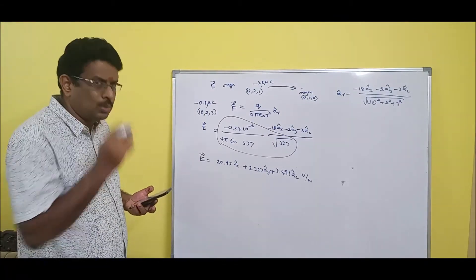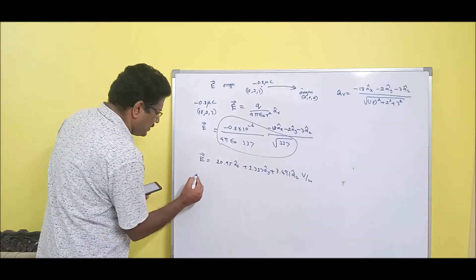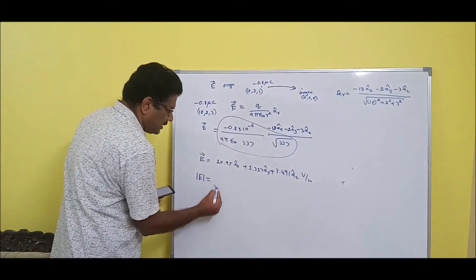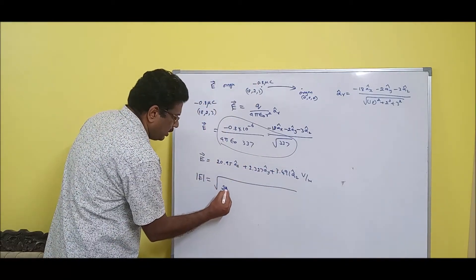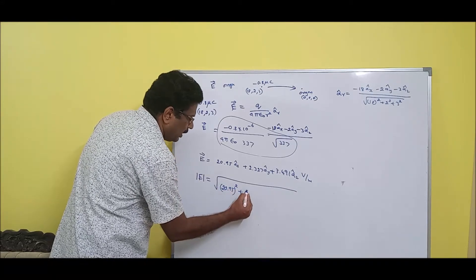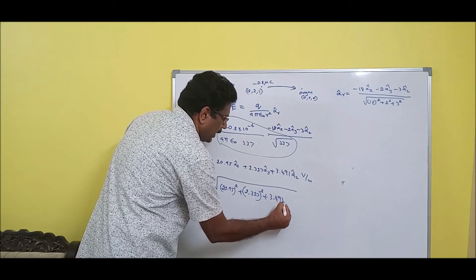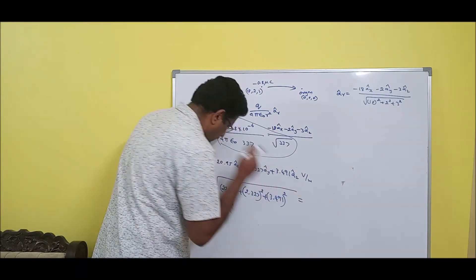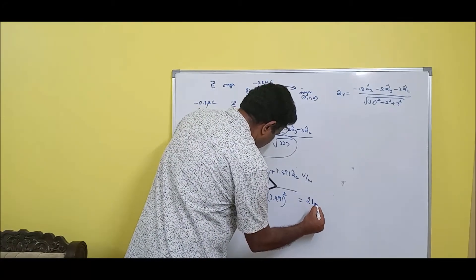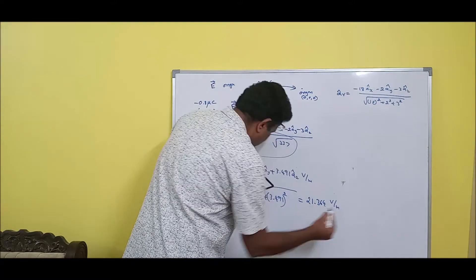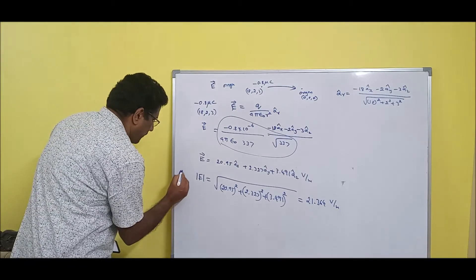They also ask for direction and magnitude. The magnitude of E is simply the square root of 20.95-squared plus 2.327-squared plus 3.491-squared, which gives approximately 21.364 volts per meter. That is the magnitude.